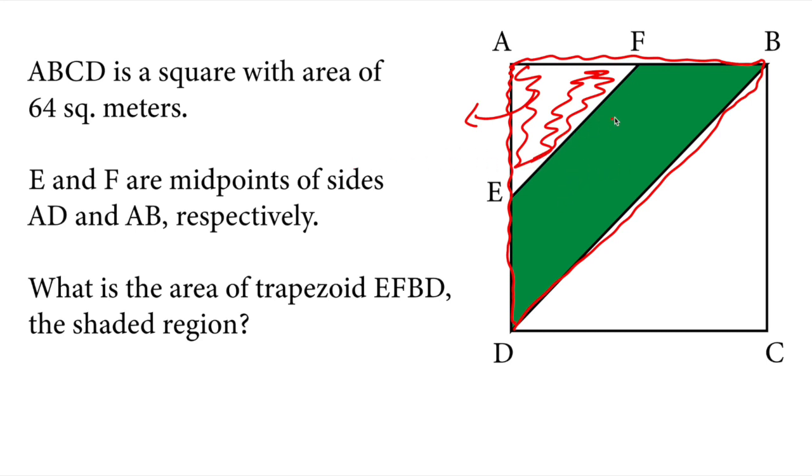We know that the area of the whole square is 64. So half of it, the area of triangle ADB, is 64 divided by 2, which is 32.